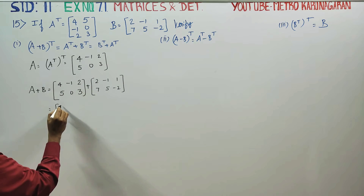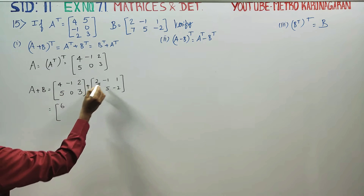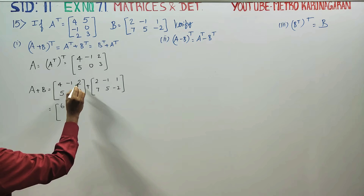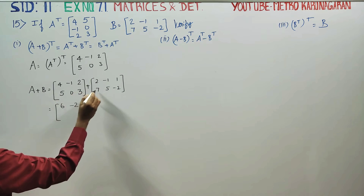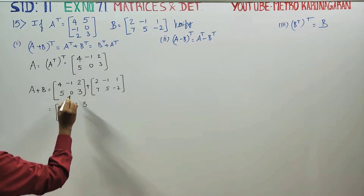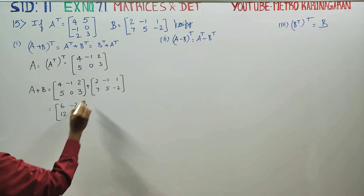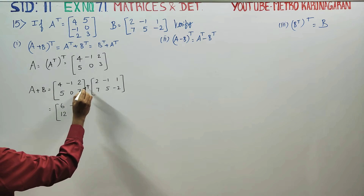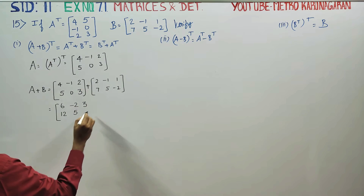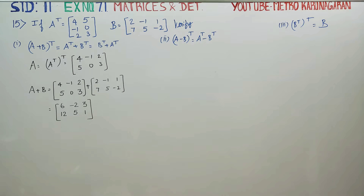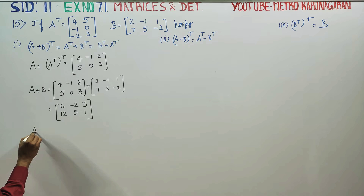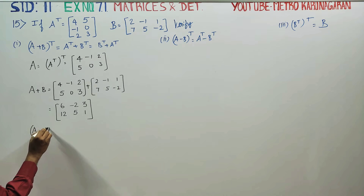4 plus 2 is 6. Minus 1 add minus 2 gives minus 3. 2 plus 1 becomes 3. 5 plus 7 becomes 12. 0 plus 5 becomes 5. 3 minus 2 becomes 1. This is A plus B.